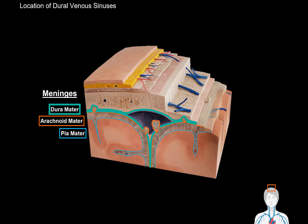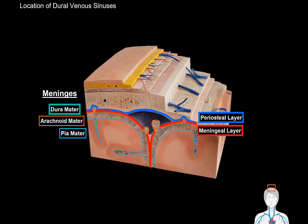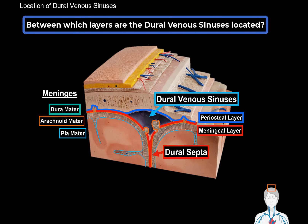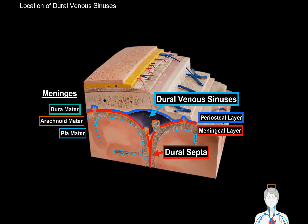Superficial to the arachnoid mater is the thickest meninges, called the dura mater. Inside the cranium, the dura mater consists of two layers: the periosteal layer, which lies very close to the skull, and the meningeal layer, which lies very close to the arachnoid mater. In the spinal cord, the dura mater only consists of one layer — the meningeal layer — because the periosteal layer stops at the foramen magnum. The periosteal and meningeal layers are bound together and only separate to form the dural venous sinuses and the dural septae. So the dural venous sinuses are located between the periosteal and the meningeal layer of the dura mater.